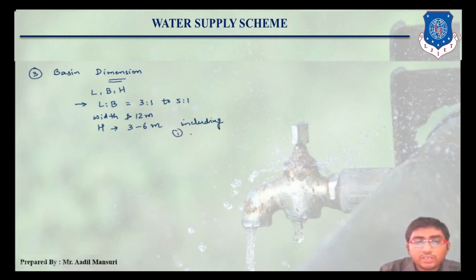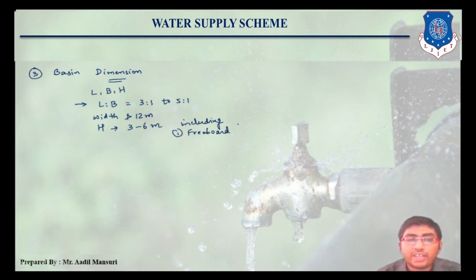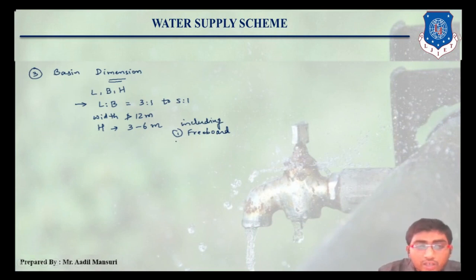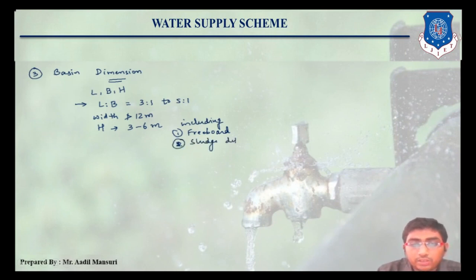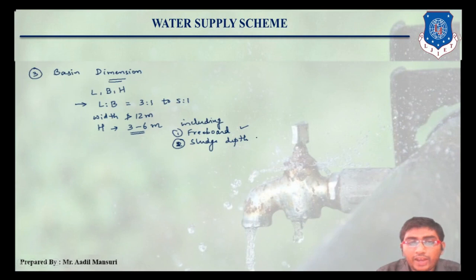The height of 3 to 6 meters includes two things: first is freeboard, which is the empty space kept above the water level, and second is sludge zone or sludge depth. So this height of 3 to 6 meters is including freeboard at the top and sludge depth at the bottom.